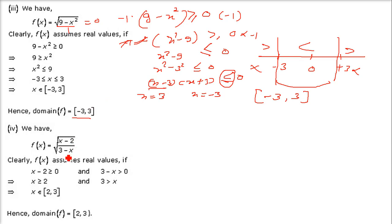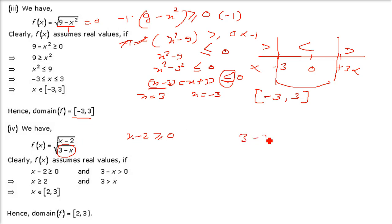Now we have a function with a root in both the numerator and the denominator. For the numerator, x minus 2 can be greater than or equal to 0 — we can have a 0 there. But for the denominator root, as already explained, we cannot have a 0 and we cannot have a negative number. So 3 minus x must be strictly greater than 0 — no equal sign allowed.